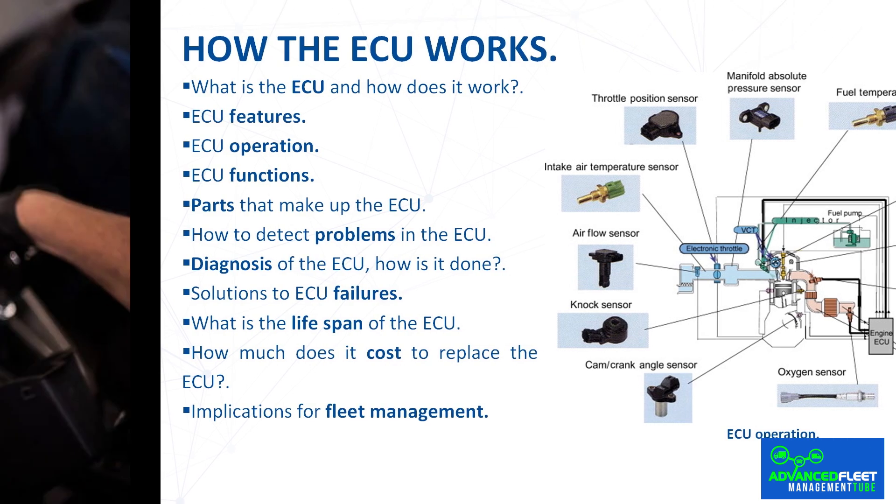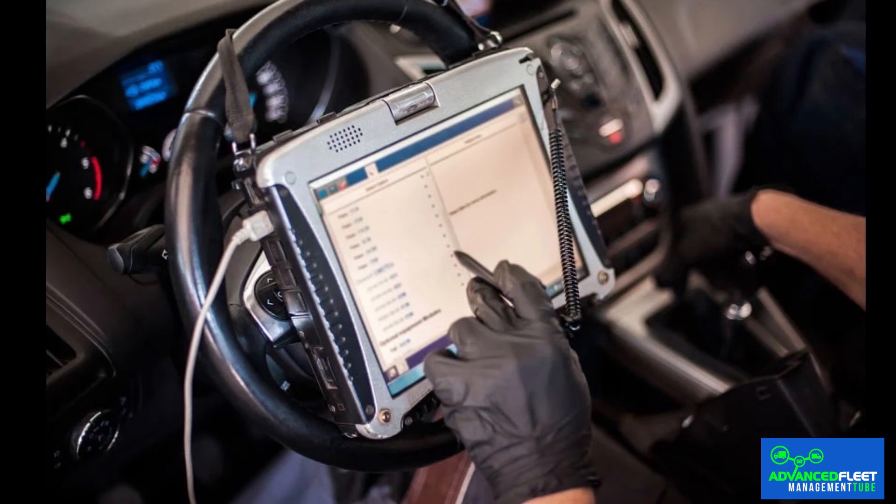Diagnosis of the ECU. Many users are unaware of the steps to diagnose the ECU, but it can be done with specific tools such as diagnostic scanners or programs specially designed for this purpose. Steps include: connecting the scanner to the car's OBD diagnostic port, usually located under the dashboard or on the engine; performing a reading of the error codes with the diagnostic scanner — these are numeric codes indicating the problem; interpreting the error codes using an error code table to determine the specific problem; and performing additional tests once the problem has been identified to find the real cause.